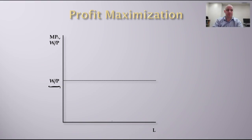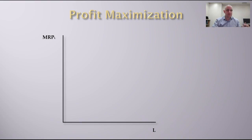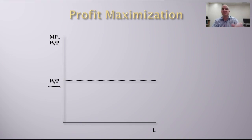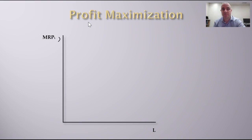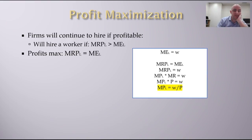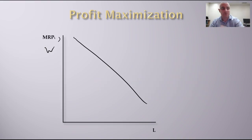You can express this in real terms — marginal product of labor equals the real wage — or in nominal terms, since you don't really observe real wages directly. In practice, you see the marginal revenue product of labor and the nominal wage. Going back, you also maximize profit where the marginal revenue product of labor equals the wage, so the demand for labor can be represented either way.